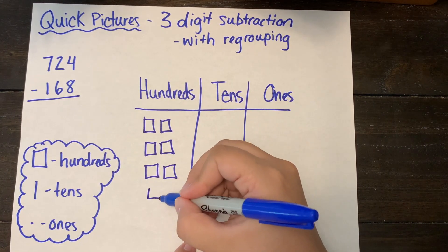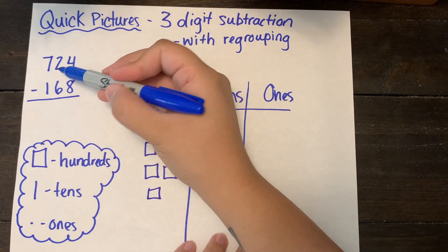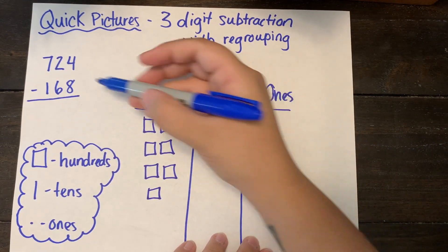So I have seven hundreds, two tens, and four ones.